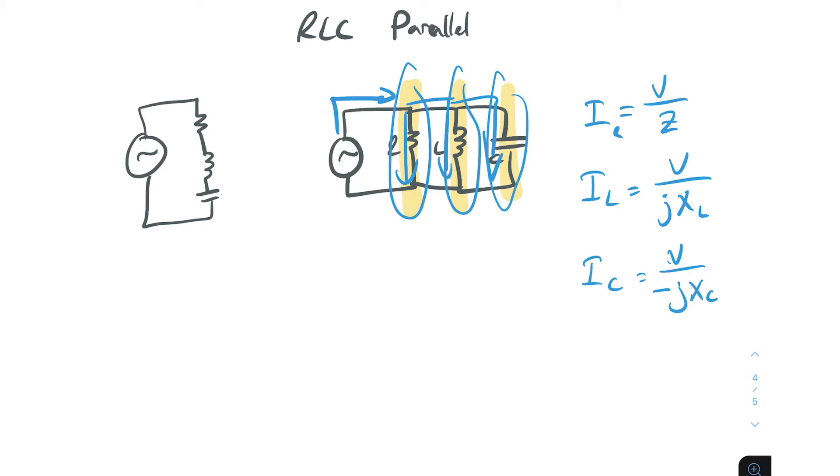So then once we've got that, then we find the total current, I total, and that's going to be IR plus IL plus IC.